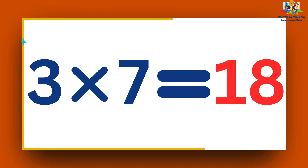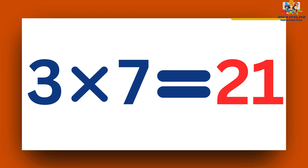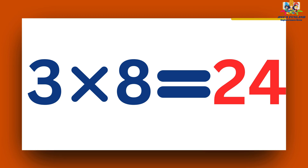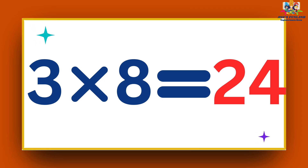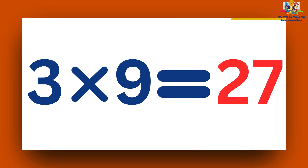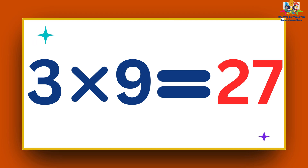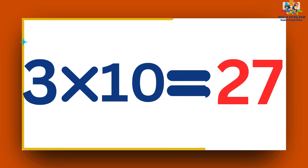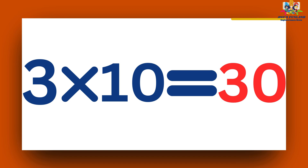Three sevens are twenty-one. Three eights are twenty-four. Three nines are twenty-seven. Three tens are thirty.